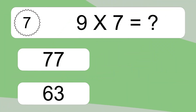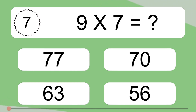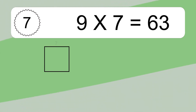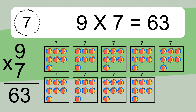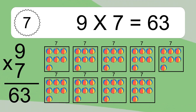9 times 7 equals what? 9 times 7 equals 63. We have 9 boxes, and each box has 7 colorful balls inside. If you count all the balls in all the boxes together, you will have 9 times 7 balls. This equals 63 balls.